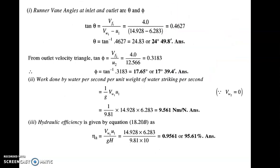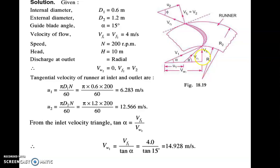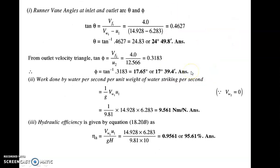Tan of theta is equal to Vf1 upon Vw1 minus u1, because you know u1, you know Vw1, you know Vf1, so you can easily calculate angle theta. So theta is equal to tan inverse of Vf1 upon Vw1 minus u1, putting all the values of Vf1, Vw1, u1. Theta is the angle of the relative velocity at inlet.